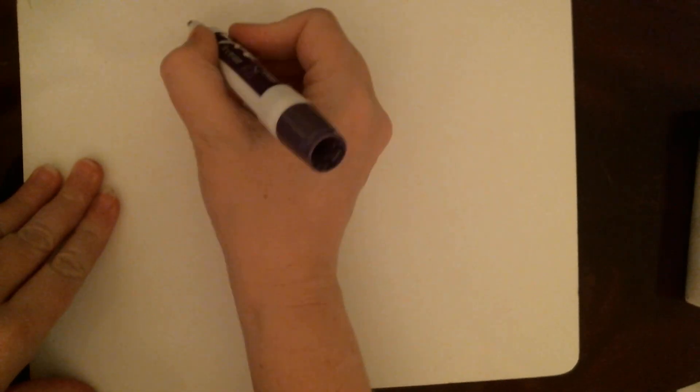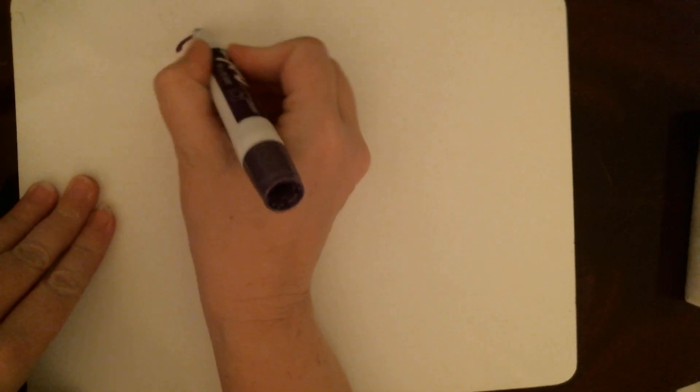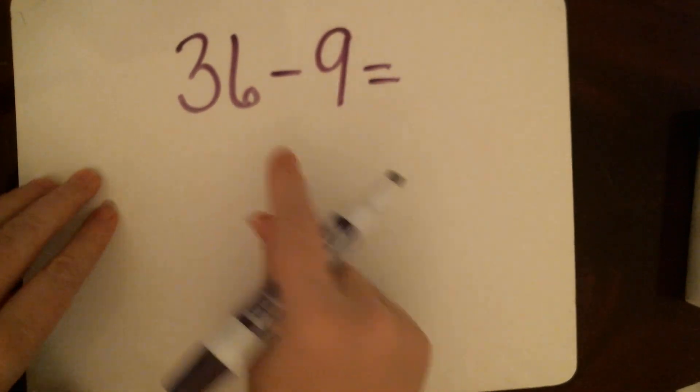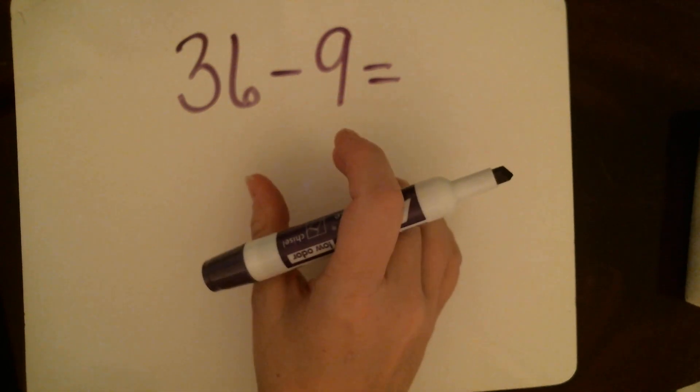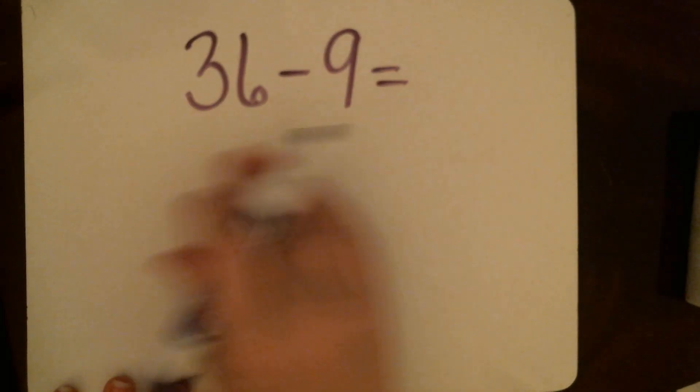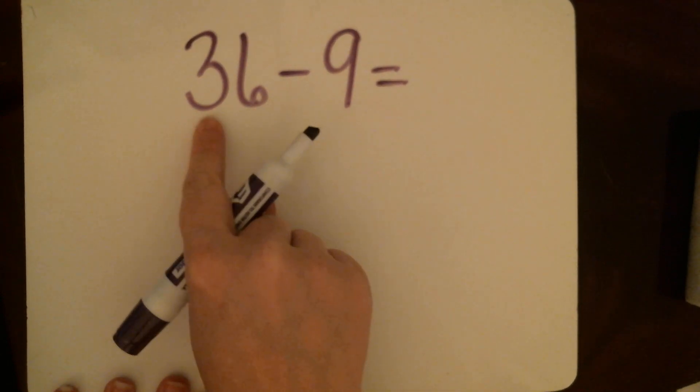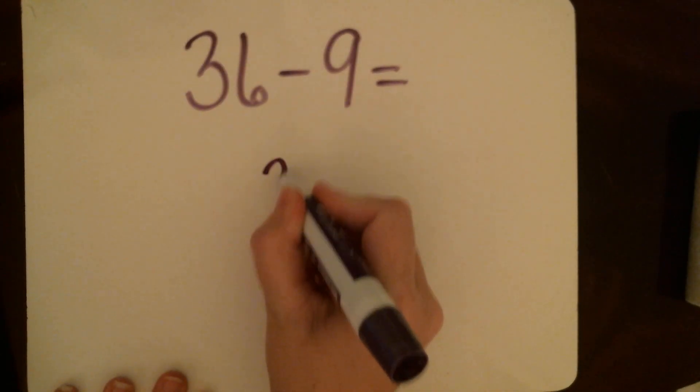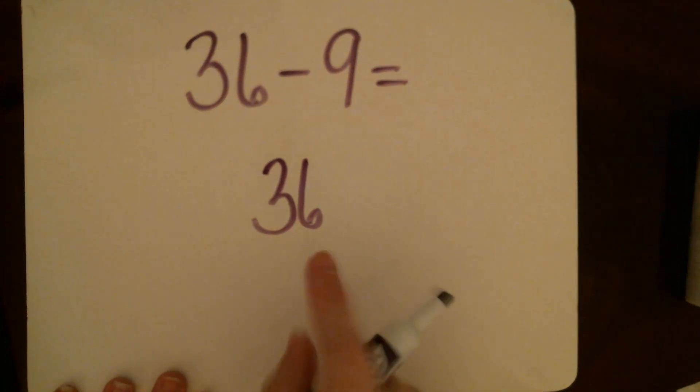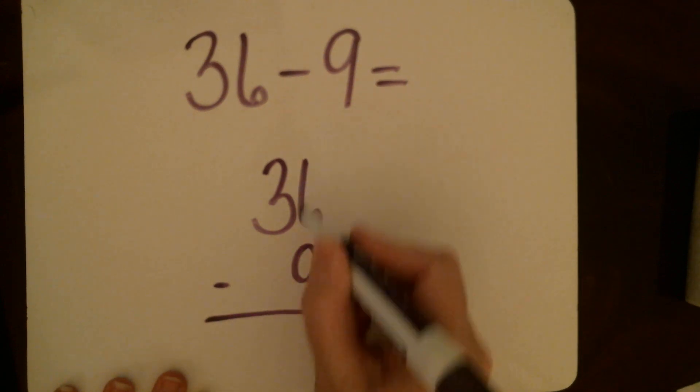Okay guys, remember that sometimes we might only be taking one digit away. Let's do this one: thirty-six minus nine equals... Remember that if it's written horizontally, we want to rewrite it vertically. Remember horizontal - we want to rewrite it vertically, lining up. This is the number thirty-six, minus nine ones.